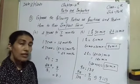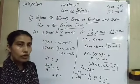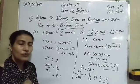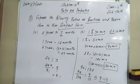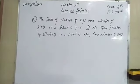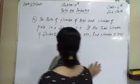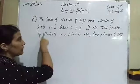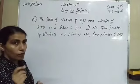In a similar way you have to solve the C and D parts of this worksheet. Now the next question: the ratio of the number of boys to the number of girls in a school is 7 ratio 5. If the total number of students in a school is 480, find the number of boys.